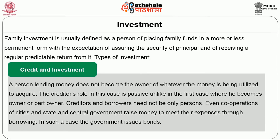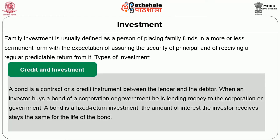The second type is credit investment. A person lending money does not become the owner of whatever the money is being utilized to acquire. The creditor's role in this case is passive, unlike in the first case where he becomes owner or part owner. Even corporations, cities, state, and central governments raise money to meet their expenses through borrowing. In such a case, the government issues bonds. A bond is a contract or credit instrument between the lender, that is the creditor, and the borrower. An investor who buys a bond of a corporation or government is lending money to that entity. A bond is a fixed return investment; the amount of interest the investor receives stays the same for the life of the bond.